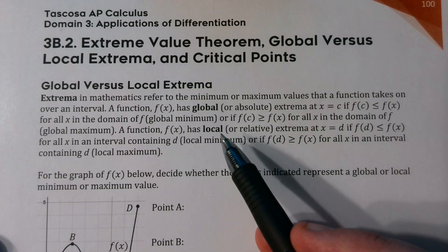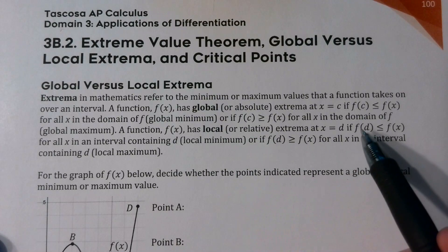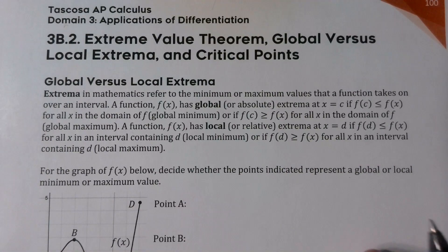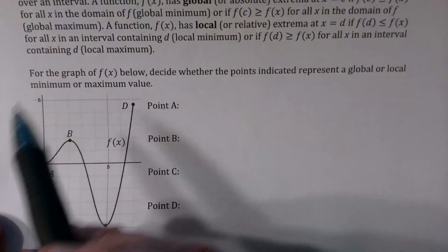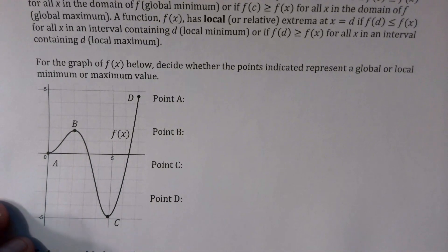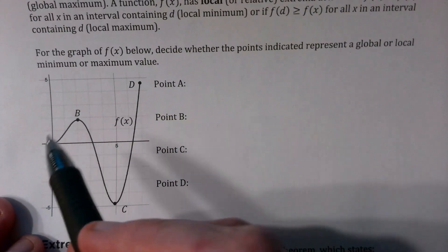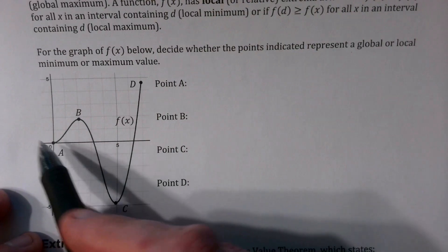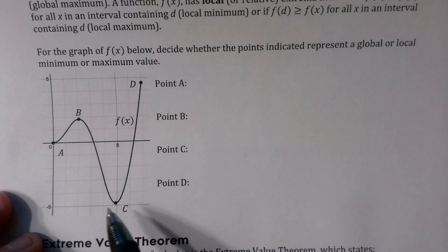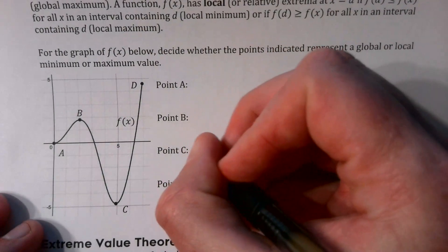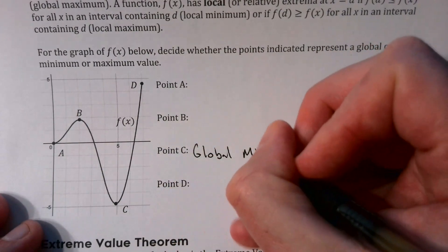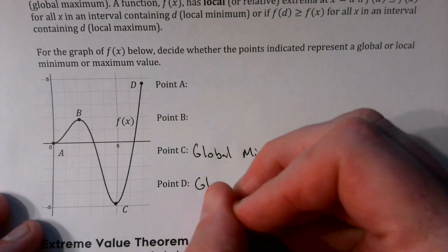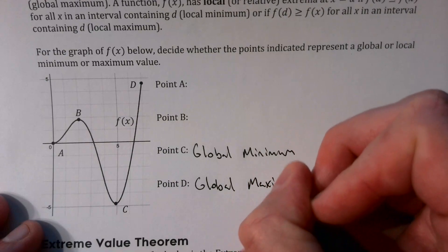We also have the idea of local or relative extrema if f(d) is less than or equal to f(x), or greater than or equal to f(x), for all x in an interval containing d. Looking at a graph of f(x), at point A we have a minimum value — it's less than some values around it, but it's not the absolute minimum. The global minimum occurs at point C, and the global maximum occurs at point D.